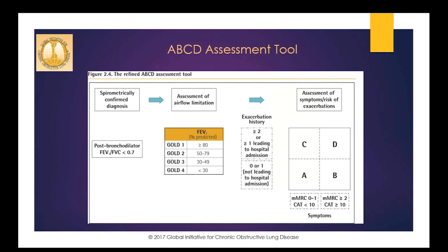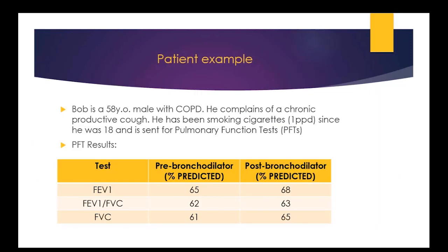Spirometry is still the gold standard for diagnosis and should be performed in patients. Spirometry confirms a COPD diagnosis and an assessment of airflow limitation is made. Patients are then categorized as GOLD 1 through 4 — mild through very severe — based on PFT results. Separate from that, we still want to assess patients based on their symptoms, risk for future exacerbations, and the effect the disease has on their overall health, categorizing them into a risk grade of A, B, C, or D.